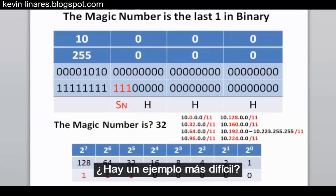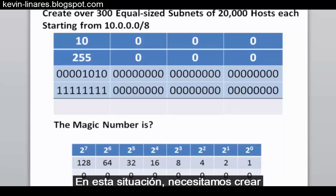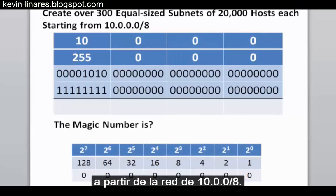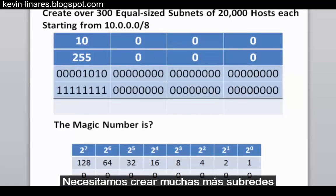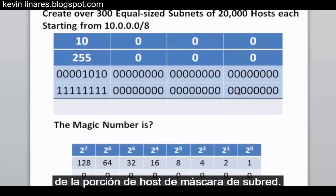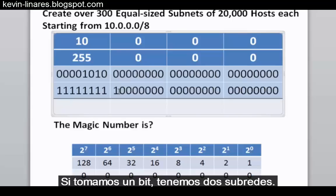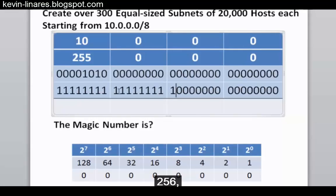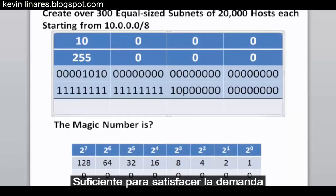Now for a more difficult scenario: we need to create over 300 equal-size subnets of 20,000 hosts each, starting from the 10.0.0.0/8 network. We need to determine how many bits to borrow. Borrowing 1 bit gives 2 subnets, 2 bits gives 4, continuing — 8 subnets, 16, 32, 64, 128, 256, 512. Borrowing 9 bits gives us 512 subnets, which is sufficient to meet the demand for over 300 subnets.